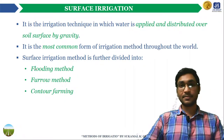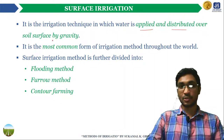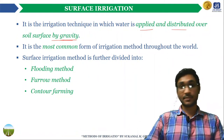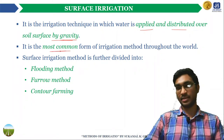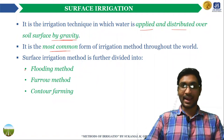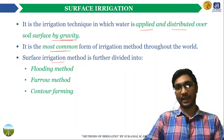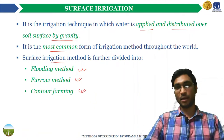Surface irrigation is a technique in which the water is applied and distributed over the soil surface by the help of gravity. Surface irrigation is the most common form of irrigation method throughout the world. The surface irrigation method can be further classified into the flooding method, the furrow method, and the contour farming method of irrigation.